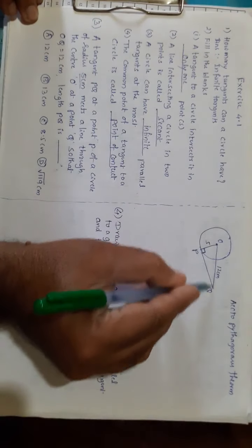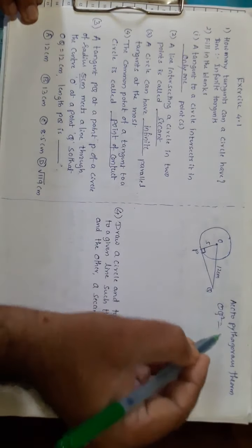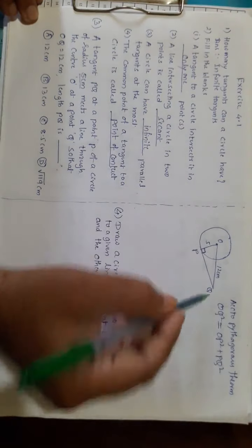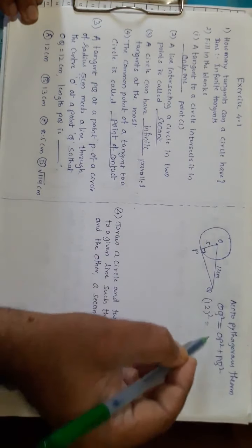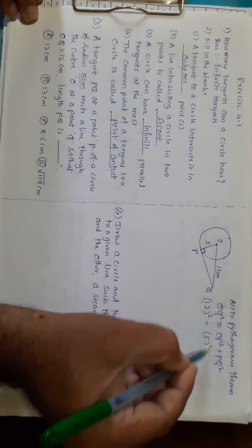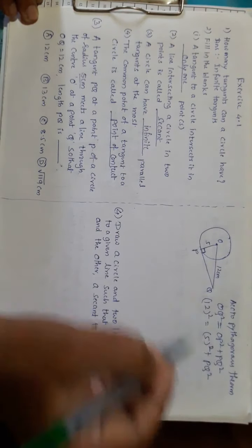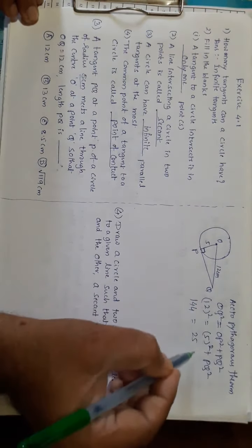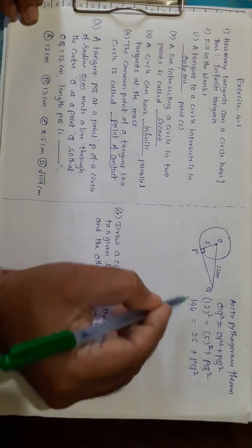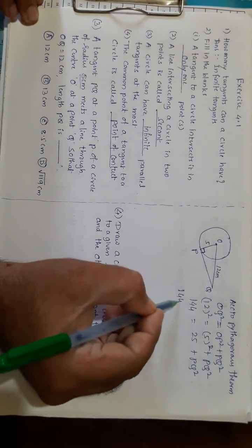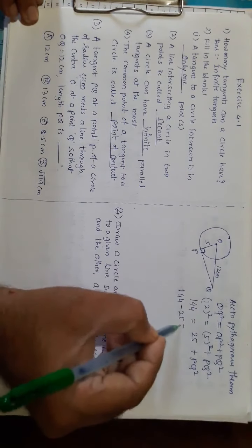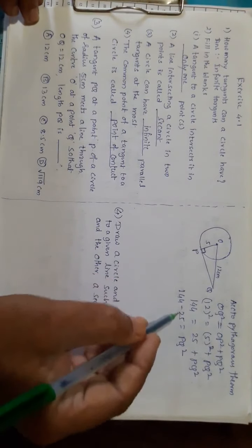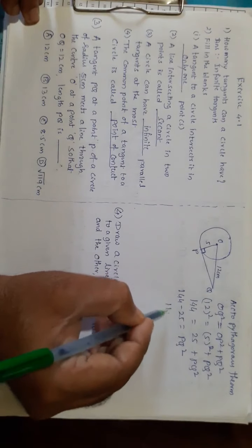OQ² equals OP² plus PQ². Substituting: 12² equals 5² plus PQ². That is 144 equals 25 plus PQ². Transferring: 144 minus 25 equals PQ². We get 119 equals PQ².